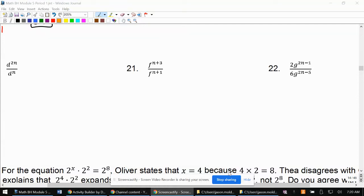21. f to the n plus 3 over f to the n plus 1. I would suggest starring 21 and 22. We actually see these come back later in the module as well.